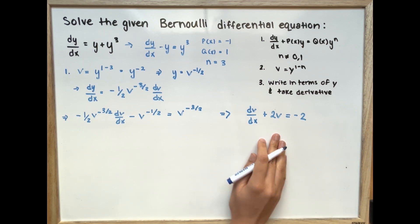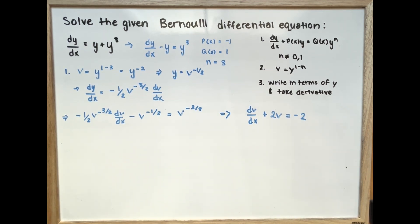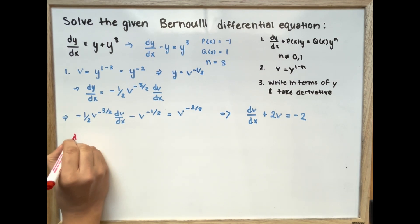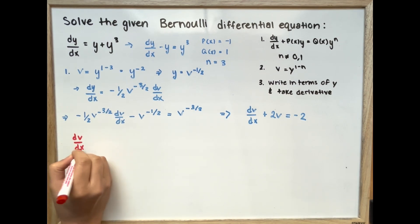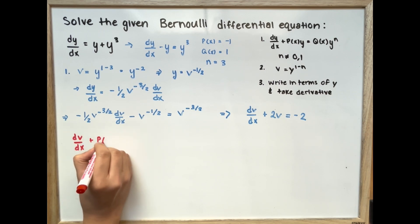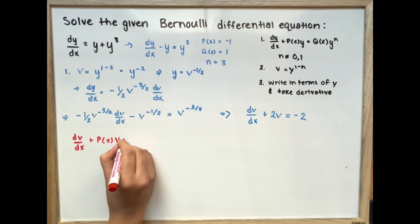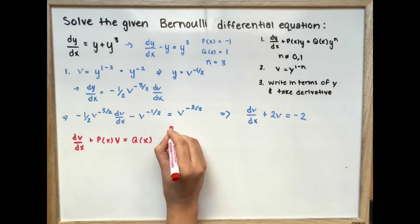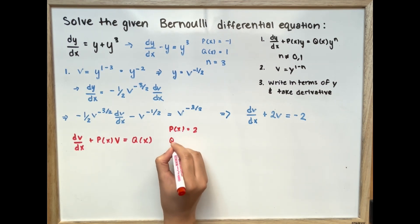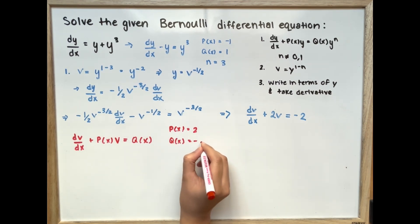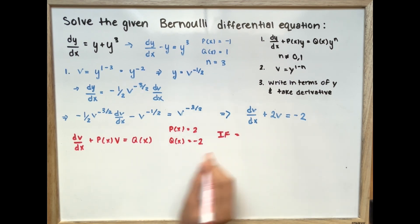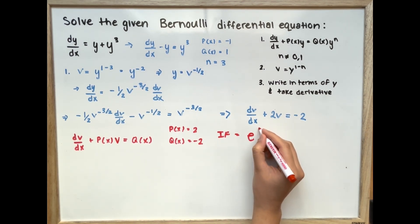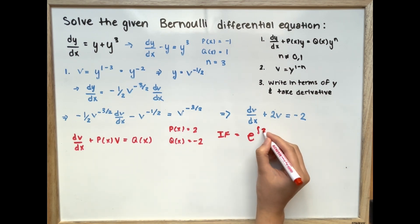If we look at this carefully, this equation is written in the standard linear first-order format: dv/dx plus p(x) times v equals q(x). Setting p(x) equal to 2 and q(x) equal to negative 2, we can use our integrating factor. Our integrating factor is e to the power of the integral of p(x), which is 2 dx.